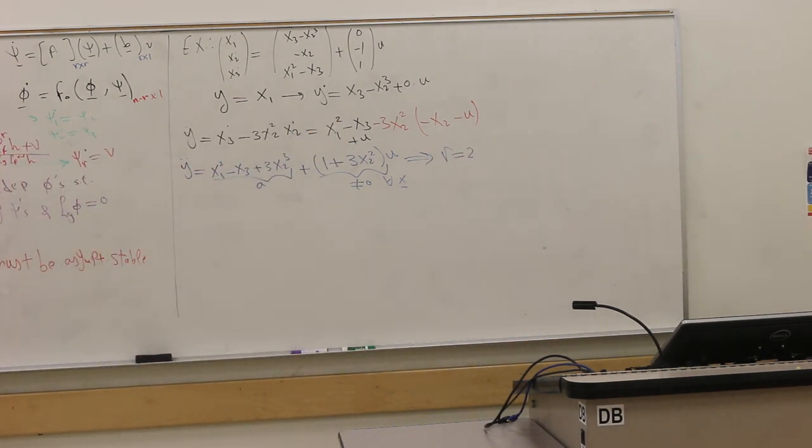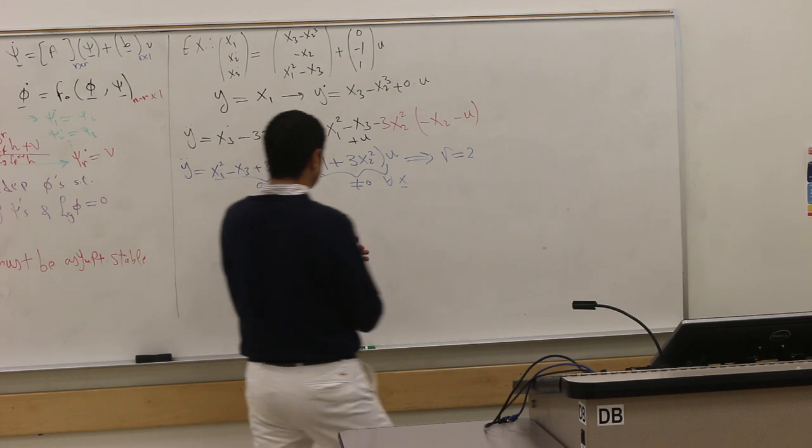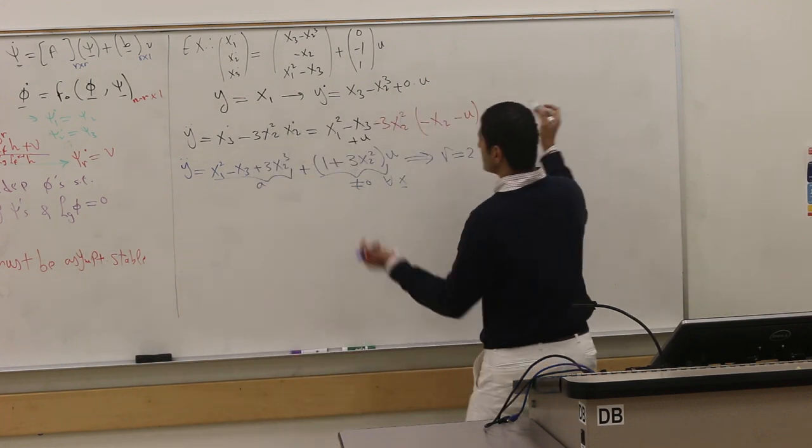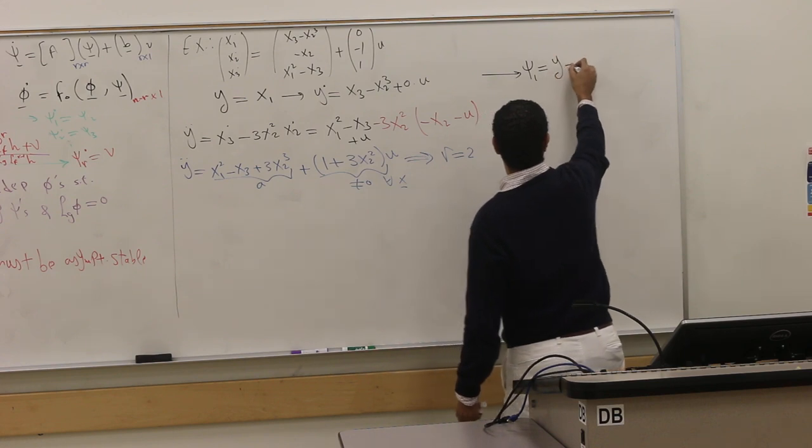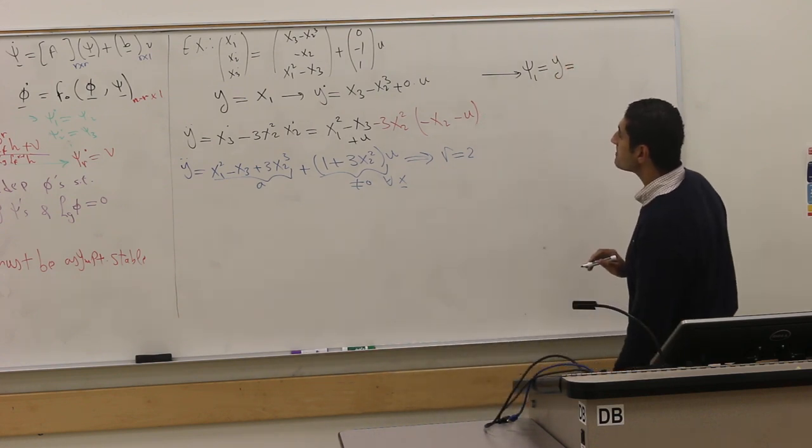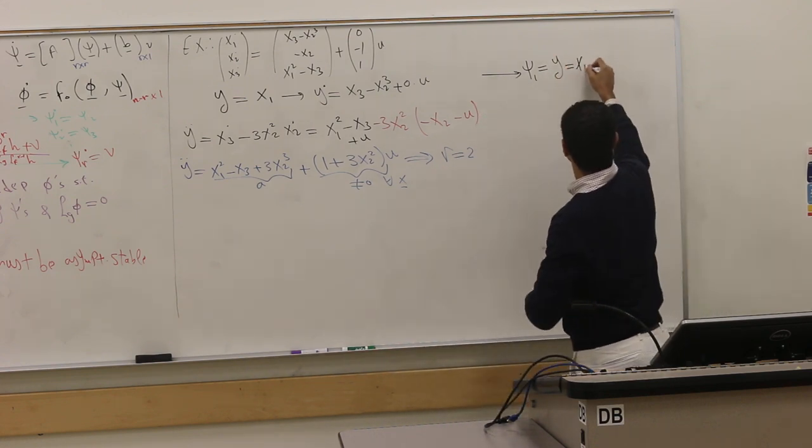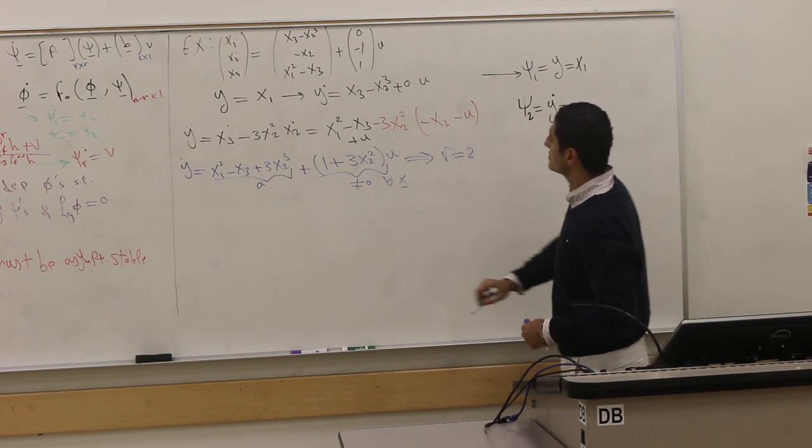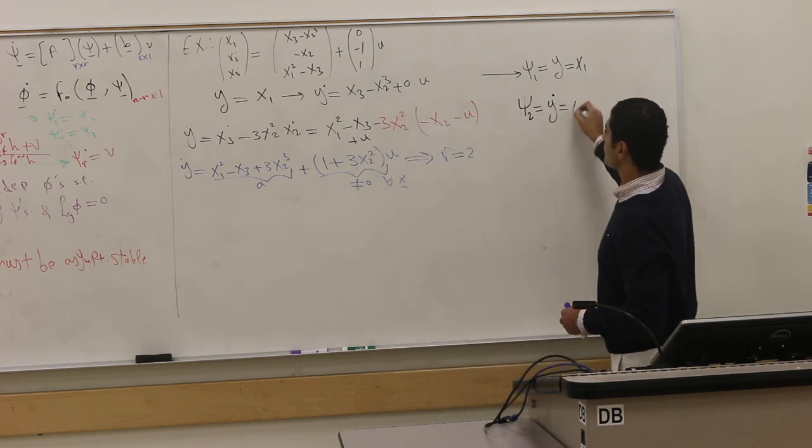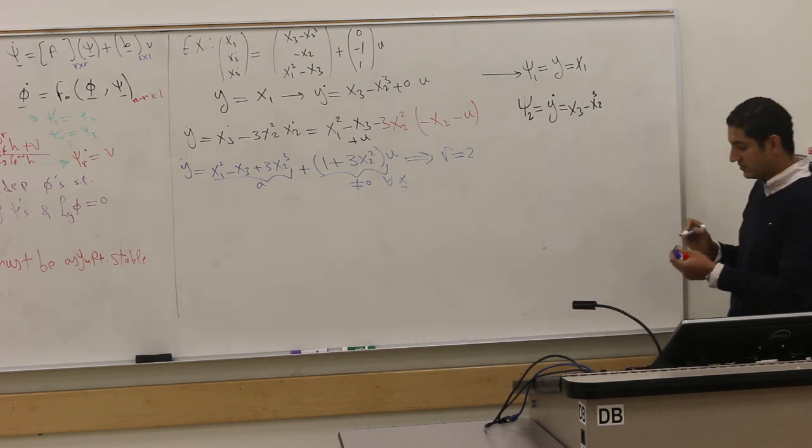y double dot is x₁² negative x₃ plus 3x₂³ something, let's call it a, plus the coefficient of u is 1 plus 3x₂². This is multiplying u. This guy is not zero for all x, so the system has relative degree two. If you have any questions, tell me.